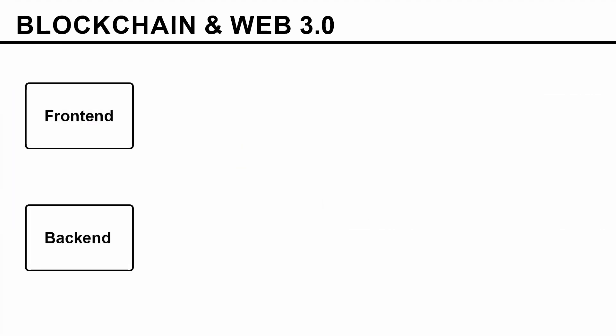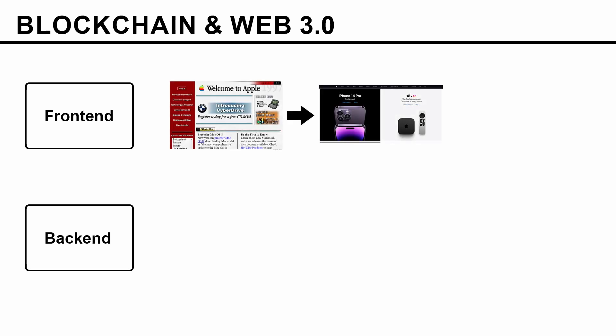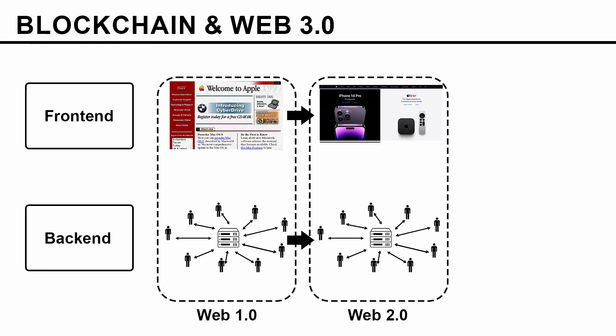If you look at a typical user experience on the web, there is the front-end and the back-end. The front-end is what the user sees, and the back-end is what happens in the background that users don't see. This is the front-end for the Apple website in Web 1.0 and Web 2.0 — you can see how drastically it has evolved. But from a back-end perspective, the back-end hasn't changed much between Web 1.0 and Web 2.0.